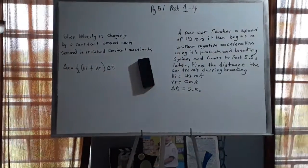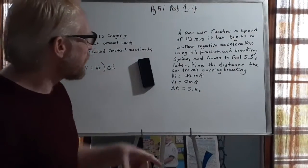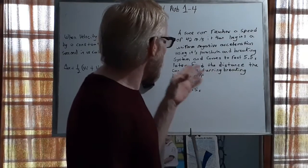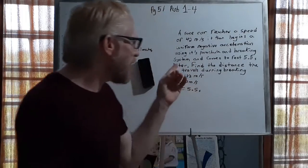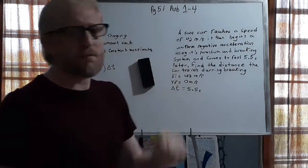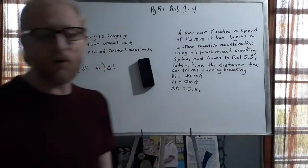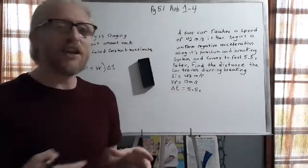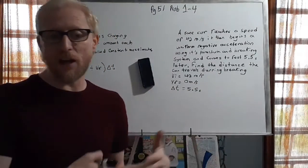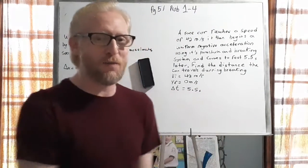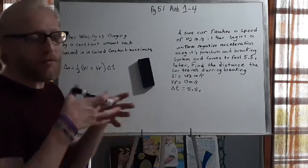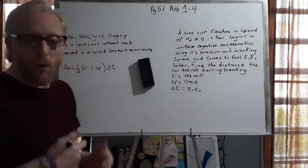And I actually have a problem from your textbook, which is actually on page 51 of your textbook, and the problem says: a race car reaches a speed of 42 meters per second. It then begins a uniform negative acceleration using a parachute and braking system and comes to rest at 5.5 seconds later. Find the distance the car travels during braking. So, a race car, those dragsters, they usually have a parachute that helps them stop along with a braking system. And they want to know how far did the car travel while it was braking, while it was slowing down.